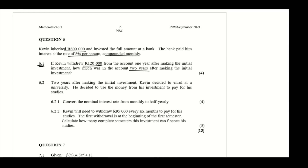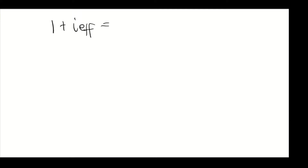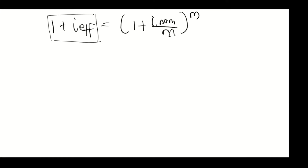Question 6.2: two years after the initial investment, Kevin decided to enroll at university and use the money from his investment to pay for his studies. Question 6.2.1 asks us to convert the nominal interest rate from monthly to half-yearly. We write the formula: 1 + i_effective = (1 + i_nominal/m)^m.